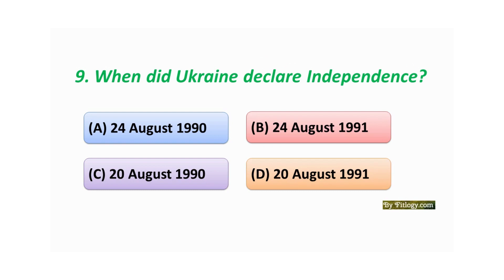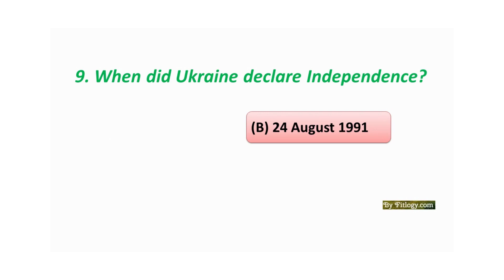Question number nine: When did Ukraine declare independence? Option A: 24 August 1990. Option B: 24 August 1991. Option C: 20 August 1990. Option D: 20 August 1991. The correct answer is Option B: 24 August 1991.